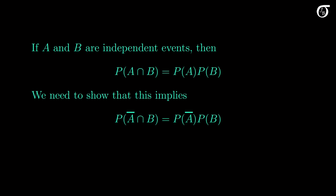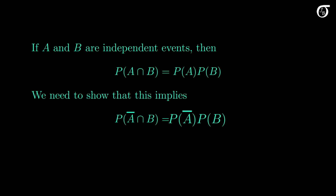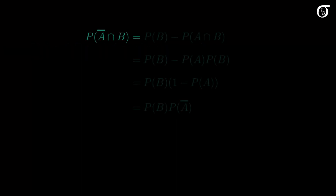We could try various approaches to show this, but the one that jumps out to me is to start with the probability of the intersection, and see if we can turn that into the product of the individual probabilities. The first step is the key part of this proof. We want to express this in terms of A and B, at least initially, so that we can use the fact that A and B are independent.